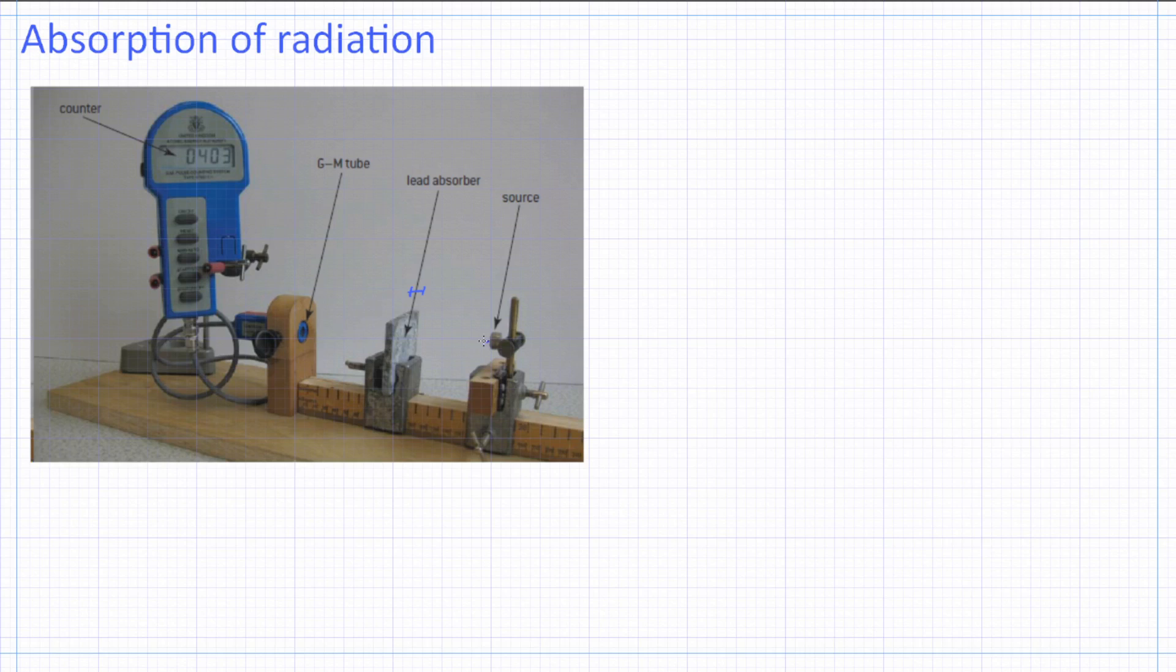And then the particle, you can observe how many of those radioactive particles, which were shot from here, got to our counter. So here is our Geiger-Muller counter. And here we can see what fraction of the radioactive source got to the counter.